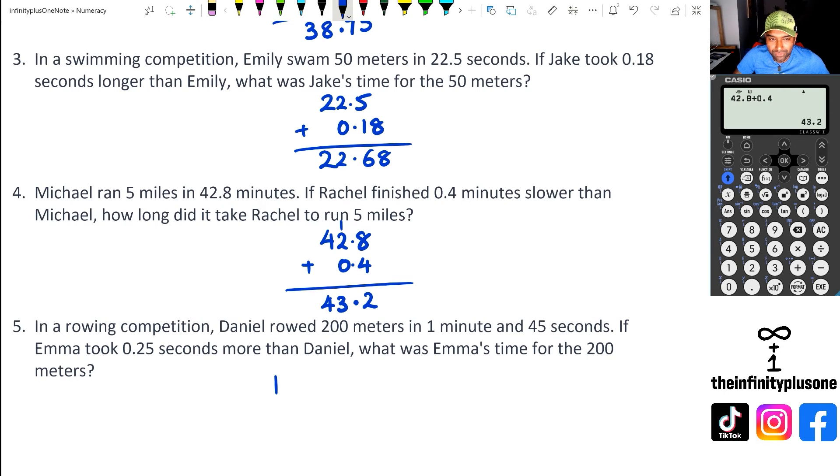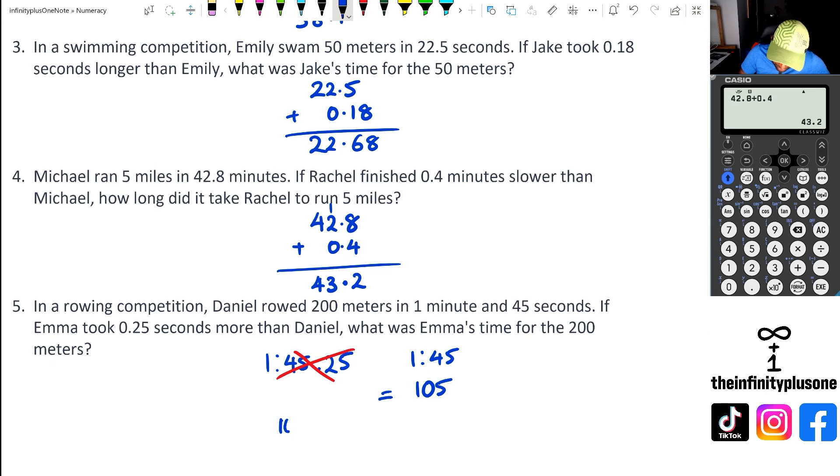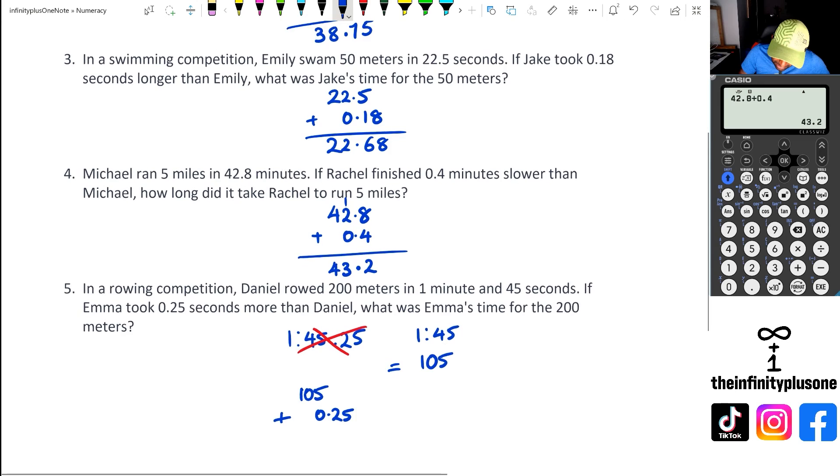What I'm going to do is rewrite 1 minute 45 seconds. So 1 minute 45 seconds could be written as, because 1 minute is 60 seconds, 60 plus 45 is 105 seconds. Then if I go 105 plus 0.25, I can actually work with that because that's just 105.00.